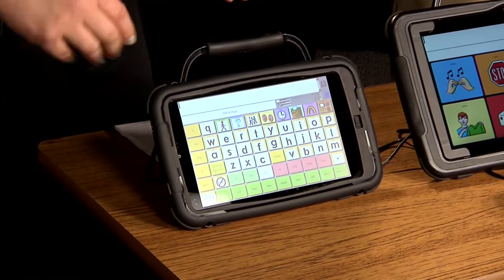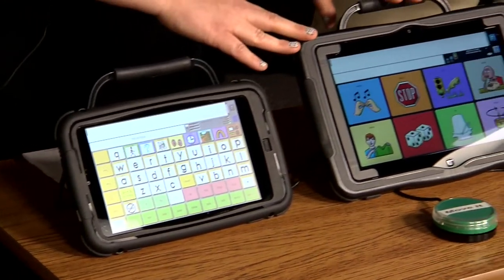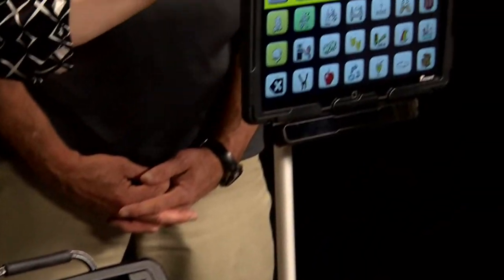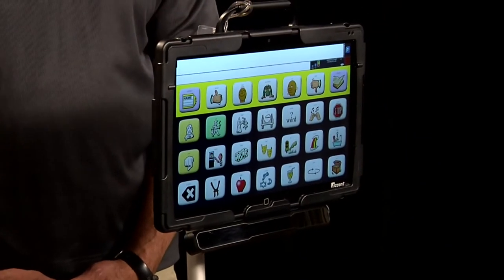You measure that from corner to corner like most screens. The Accent 1000 is a 10 inch screen, and the Accent 1400 here is a 14 inch screen.